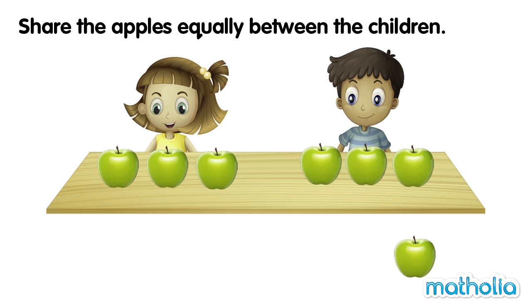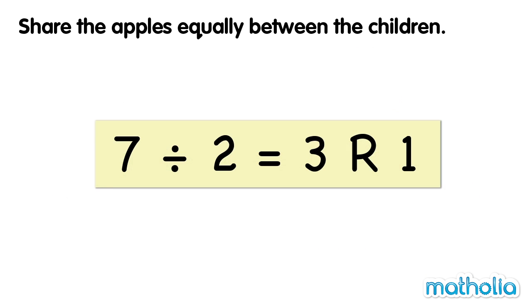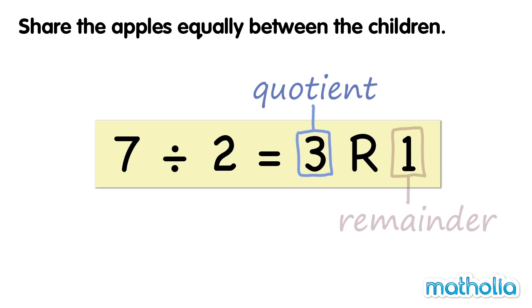We can write this division equation. The result is called the quotient. The part left over is called the remainder. We read the equation as: seven divide two equals three remainder one.